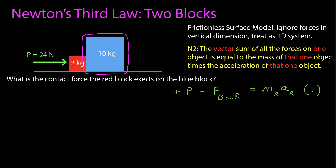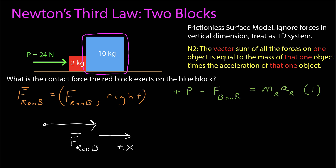Now I'll apply Newton's second law to the blue block. In the horizontal dimension, the only object touching the blue block and exerting a horizontal force is the red block. So the force of the red block on the blue block points to the right. The free body diagram has one force to the right, giving the scalar equation: magnitude of that force equals the mass of the blue block times its acceleration. But I still have four unknowns and only two equations — not enough to solve.